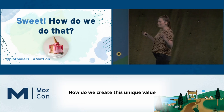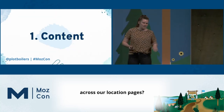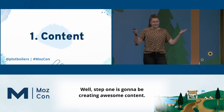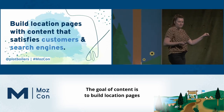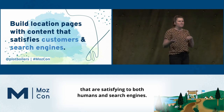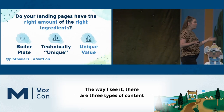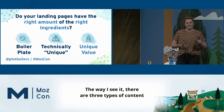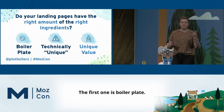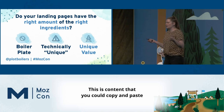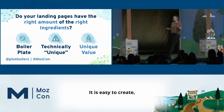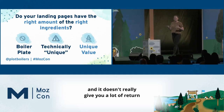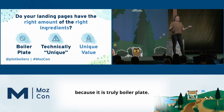So how do we create this unique value across our location pages? Step one is going to be creating awesome content. The goal of content is to build location pages that are satisfying to both humans and search engines — two audiences. There are three types of content you can add to your location pages. The first one is boilerplate: content you could copy and paste across any location and it would be true. It is easy to create but doesn't give you a lot of return on your time investment because it is truly duplicative.